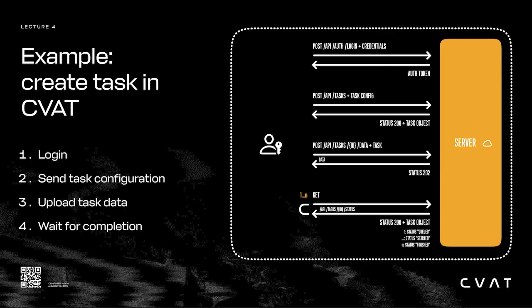Here's an example of how to create a task in CVAT. We start with logging in. The user sends a POST request to the login endpoint containing their username and password. The server then responds with an auth token. Then we send a new POST request to the tasks endpoint with our new task configuration. We can see the fields for this configuration on the API reference page. Once the server creates the task, it responds with a new task object encoded as a JSON document.